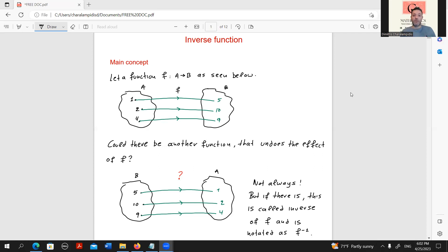The main question is as follows: Could there be another function that undoes the effect of f? Could there be a function that relates the same values of B to the corresponding values of A, but this time the values start from set B? For instance, could we have a function that takes 5 and relates it to 1, takes 10 and relates it to 2, takes 9 and relates it to 4? The answer to this question is not always. But if there is such a function, this is what we call inverse function of initial function f, and we symbolize that by f^(-1).